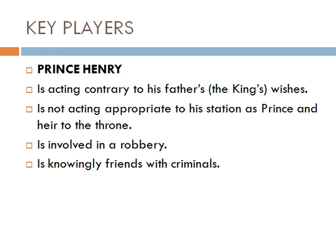Prince Henry is acting contrary to his father's wishes — and his father is the king — so there's disorder both as a son and as a subject. He's not acting appropriate to his station as prince and heir to the throne. He's involved in a robbery — yes, it's a joke on his friends and he pays the money back — but we're talking about the heir to the throne being involved in a robbery. He's also knowingly friends with criminals, hanging out with people he knows are thieves, and there's clear disorder there with Prince Henry.